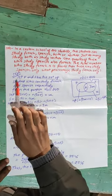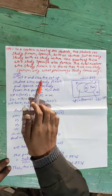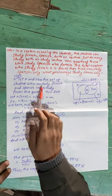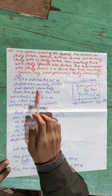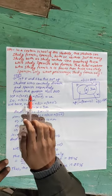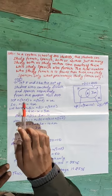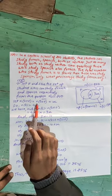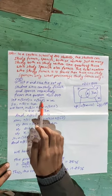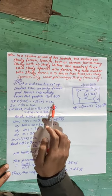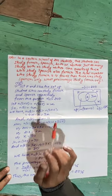Solution: Let F and S be the set of students who study French and Spanish respectively. From the question, n(U) = 200. Let n(S ∩ F) = n((S ∪ F)') = X. So both is denoted by X.